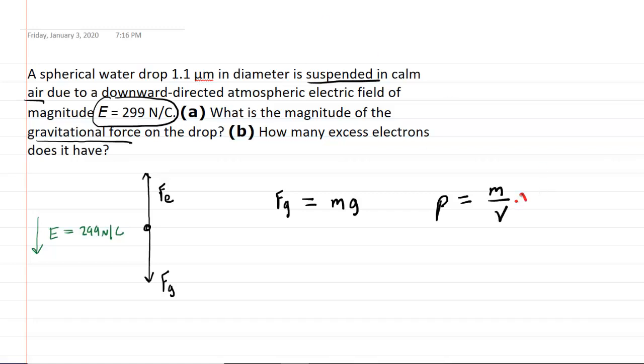Notice if we multiplied both sides of the equation by volume, the volumes would cancel. And then we would have volume multiplied by density is equal to mass. So we're going to make a substitution here. We're going to replace the mass in this equation with volume times density.